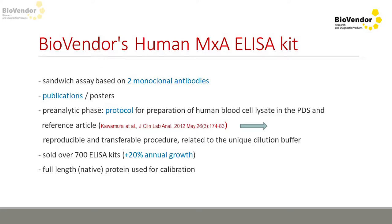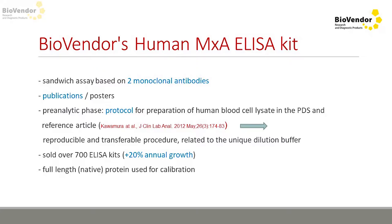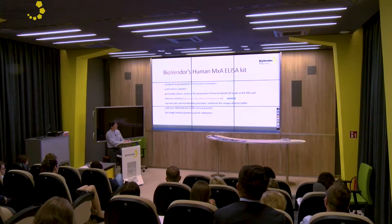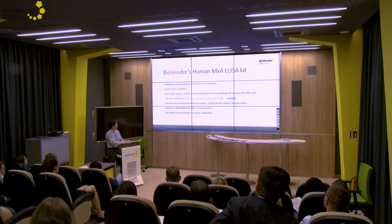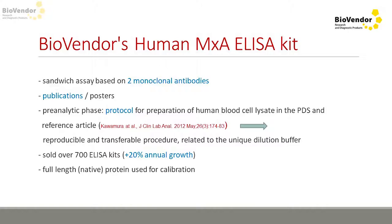At the end, I would like to highlight the advantages of our assay. It is a sandwich assay based on two monoclonal antibodies, so we believe we will maintain the same clinical sensitivity and specificity. It will also be possible to transfer this assay to different platforms including automated analyzers. We have great publications, a very good protocol for sample preparation — done either by the assay buffer in the kit or by customers themselves using the published formula. We have sold over 700 kits without any bad feedback, and we see about 20% annual growth on that item.